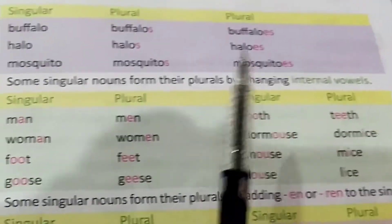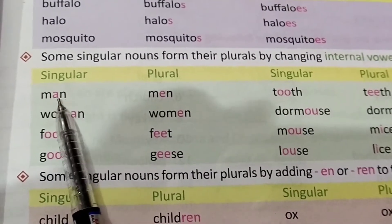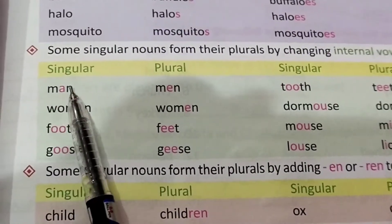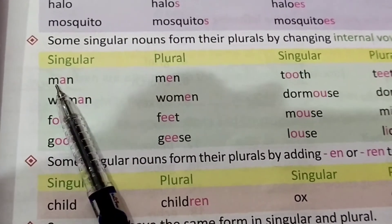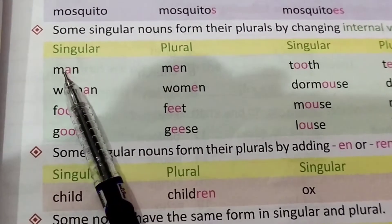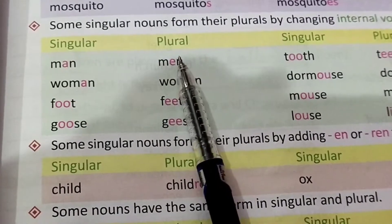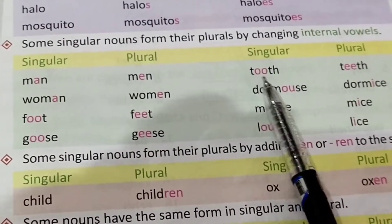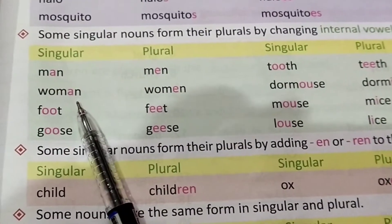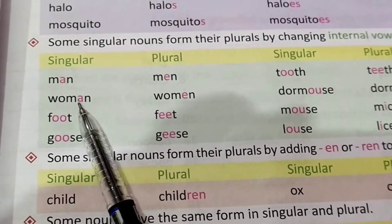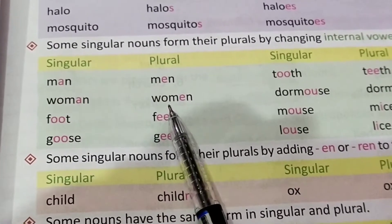Some singular nouns form their plural by changing internal vowels. For example: man — the internal vowel is 'a', so men (changing to 'e'). Tooth — the internal vowel is 'oo', so teeth. Woman — the internal vowel is 'a', so women.